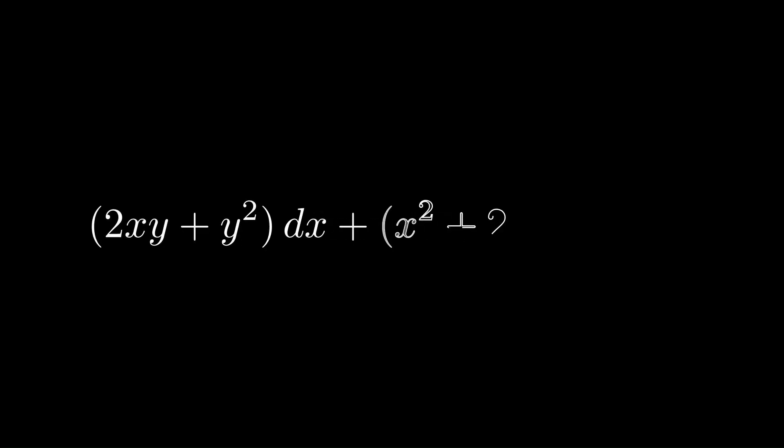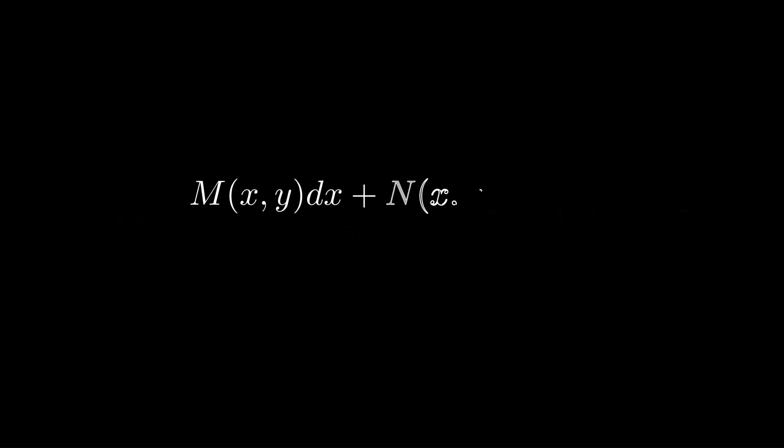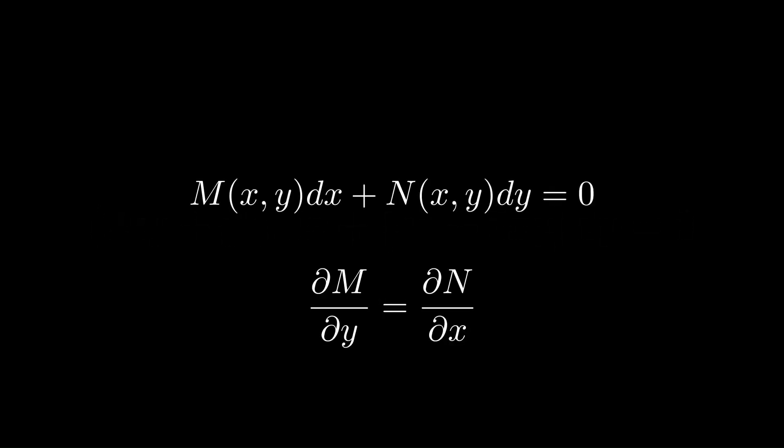Now we have the exact ODE. It comes in the form M(x,y) dx + N(x,y) dy = 0. For it to be exact, we need the partial derivatives — ∂M/∂y and ∂N/∂x — to be equal.